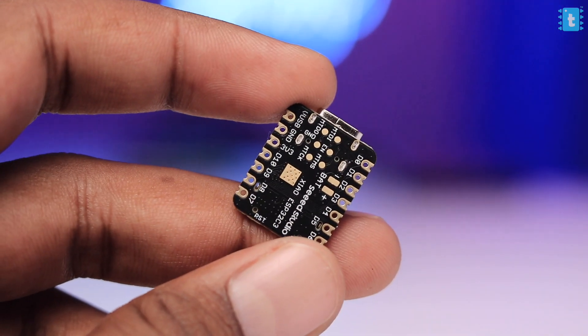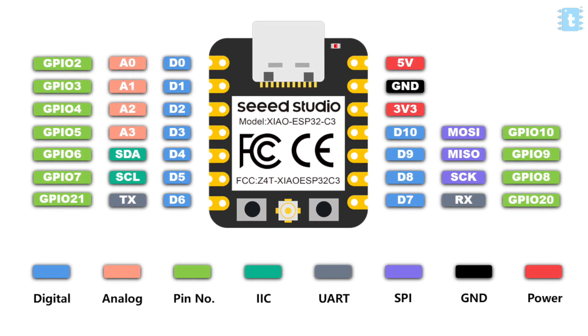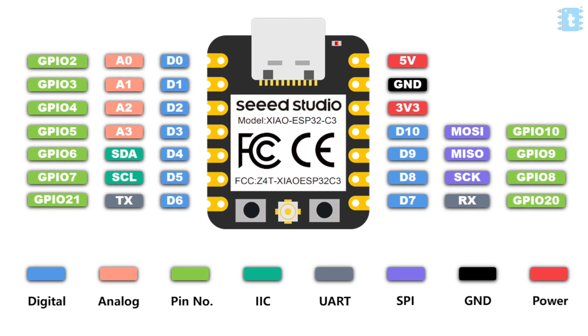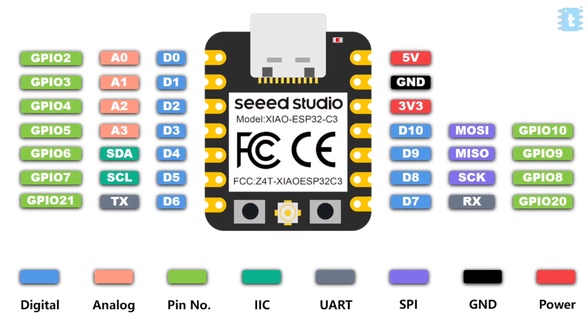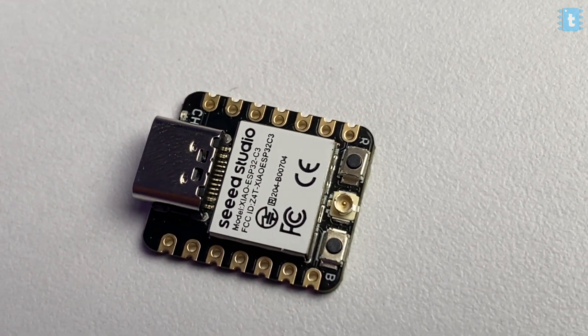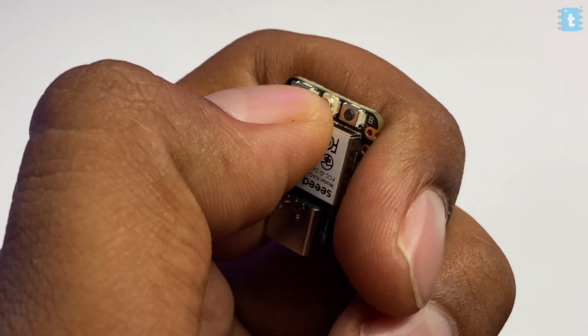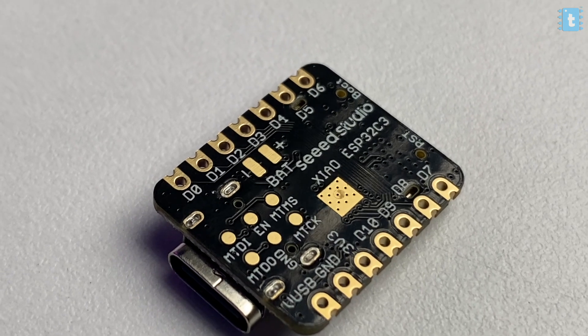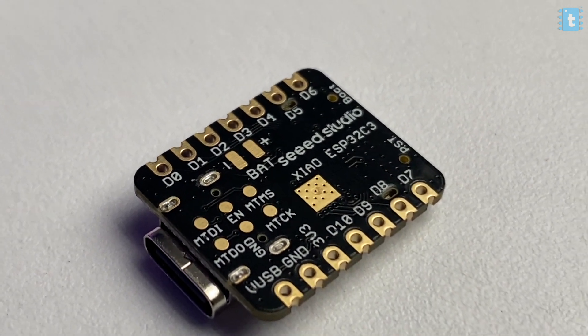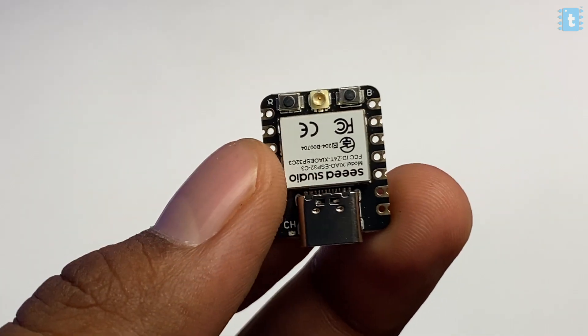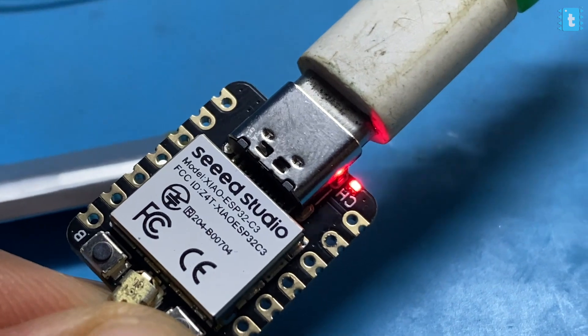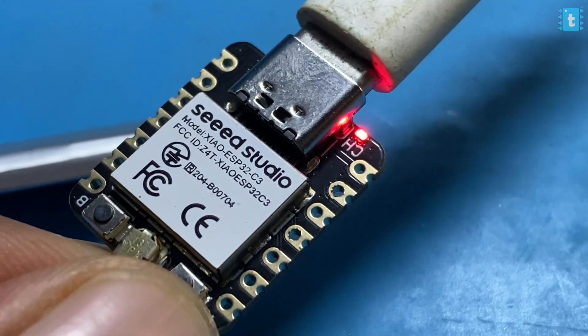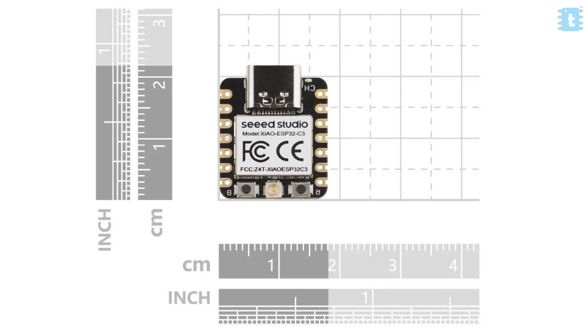The Xiao board comes with 11 GPIO pins, out of which all pins can be used as PWM pins, while 4 pins can be used as analog pins. It also has pins for I2C, SPI, and UART communication. On the board, we get two push buttons — one is the boot button and the other is the reset button. This board also has a battery connector at the back with a built-in battery charging circuit. We can power up and program the board using the Type-C connector. There's also a small built-in LED, but it is not attached to any GPIO — it's a battery charging indicator LED. We get all this at an insanely small size of just 21 by 17.5 mm.